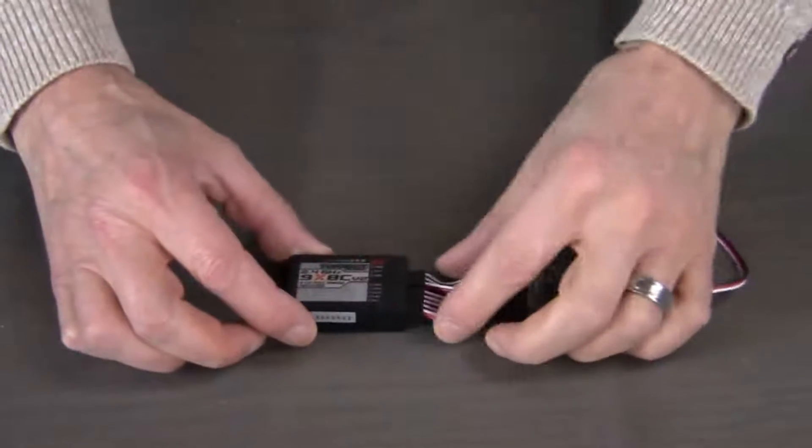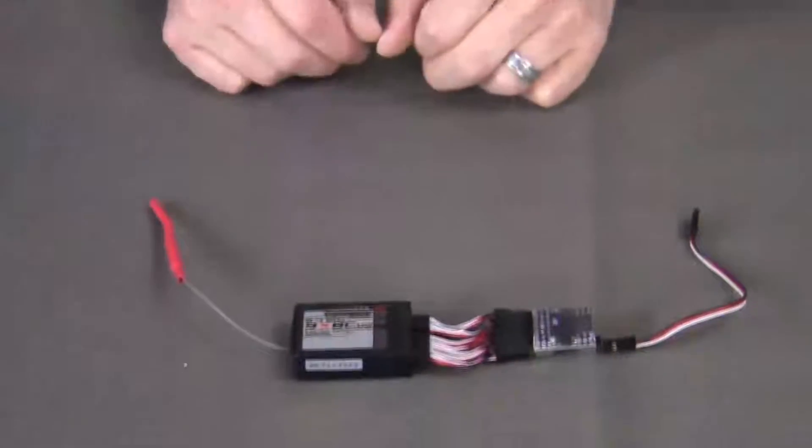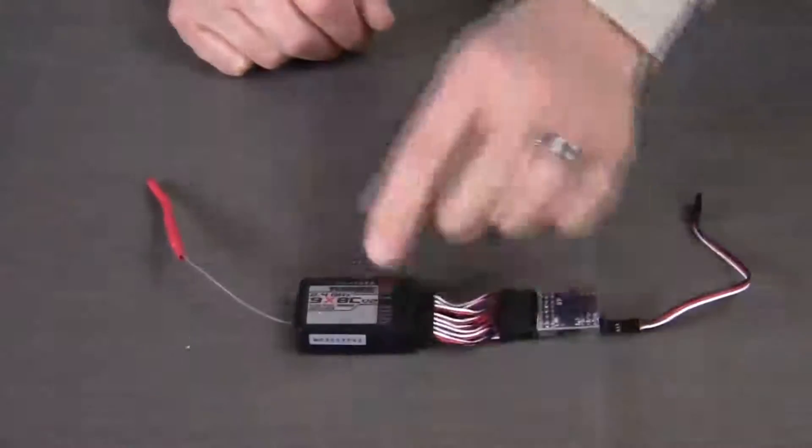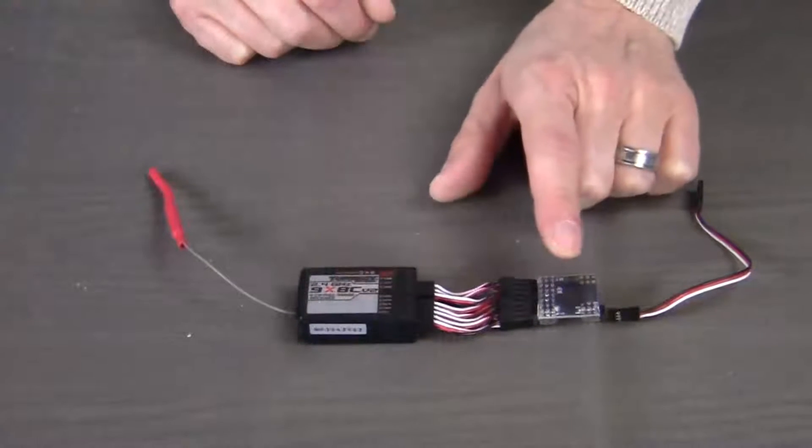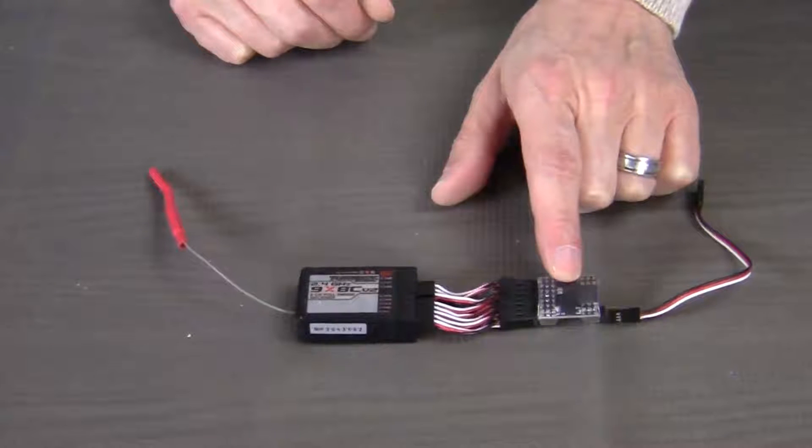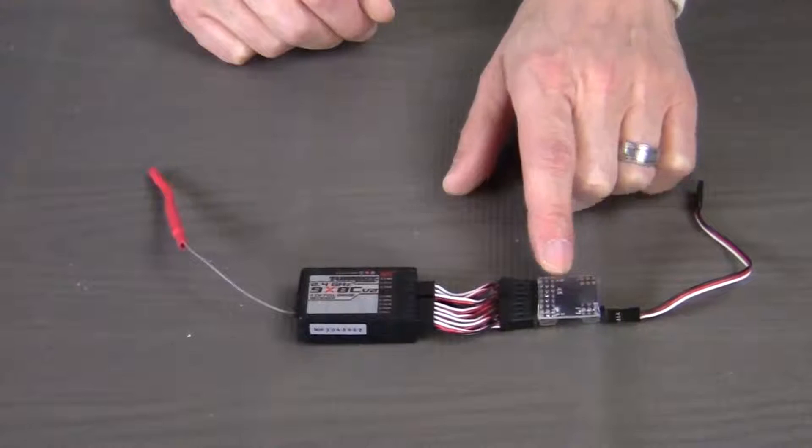The final component that we want to attach to the PixHawk flight controller is the Turnigy 9X receiver. And in order to do that, we first have to connect it to what's called a PPM encoder.